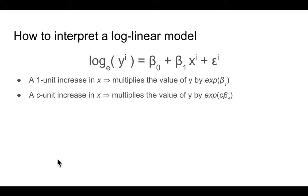So in terms of how you interpret a log linear model, the code is not as straightforward as one unit increase in X is a one unit increase in Y. In this case, a one unit increase in X basically multiplies the value of Y by the exponential of beta 1. And something similar for C, you have to take exponential of C times beta 1. And that's because of the rules of how exponential functions work. But I'm not going to go through that. And you can find it yourself if you want to know more details.